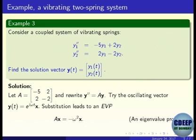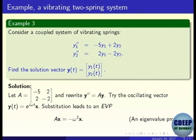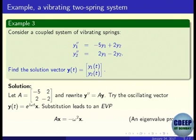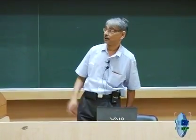Since we are expecting an oscillating system, we try an oscillatory vector as a solution: e^(iωt) times a constant vector x. We substitute in the equation: y'' becomes -ω² e^(iωt) and Ay becomes A e^(iωt) x. After cancelling the scalar e^(iωt), which is always non-zero, we get this eigenvalue problem with eigenvalue -ω² and we have to find eigenvector x, which solves the problem.